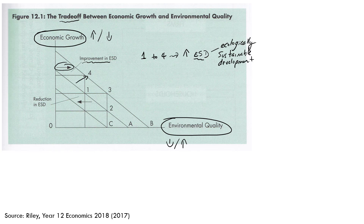Essentially, the economy is prioritizing environmental quality over economic growth. Now, if we think about an economy producing at point 0.2 and it decides to move the other way — let's say from 0.2 to 0.5 — that is actually a reduction in ecologically sustainable development.